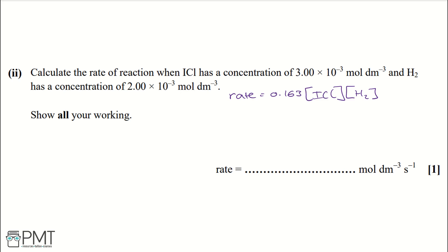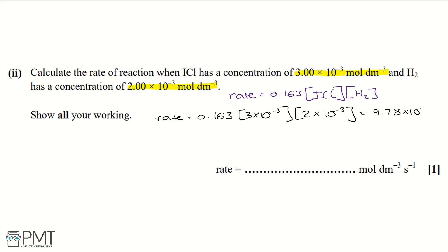Plugging in the concentrations — ICl is 3 times 10 to the negative 3 mol dm⁻³ and H2 is 2 times 10 to the negative 3 mol dm⁻³ — we get: rate equals 0.163 multiplied by 3 times 10⁻³ multiplied by 2 times 10⁻³, which equals 9.78 times 10 to the negative 7 mol dm⁻³ s⁻¹. To get the mark for this question, you must write 9.78 times 10 to the negative 7 on the answer line.